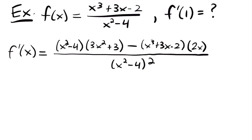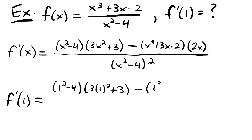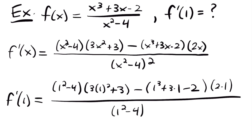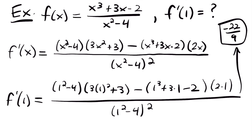Now since we're just plugging in a value of 1, I think it's easier to plug 1 in everywhere we have an x and evaluate from there. However, if we were just looking for the derivative of this function, our answer here would be acceptable. So f prime of 1 would be equal to 1 squared minus 4 times 3 times 1 squared plus 3, minus 1 cubed plus 3 times 1 minus 2, times 2 times 1, all divided by 1 squared minus 4 squared. You would find that this equals negative 22 ninths. So feel free to check that work and make sure you can get this answer yourself. That would be the value of the derivative at x equals 1.